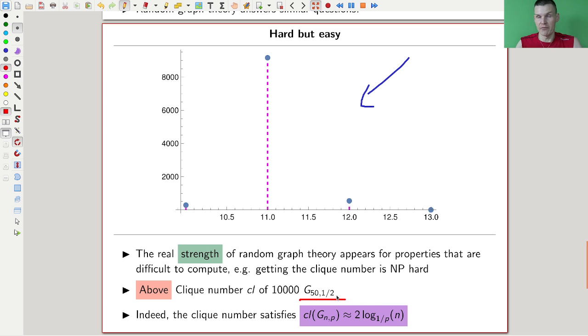That's a fun thing that happens for the average clique number. I did those 50 coin flip graphs, 10,000 of them, and computed the clique number. You can see a clear pattern. The clique number just spikes at one value, which is around 11 in this case. So almost all graphs have the same clique number, but determining it explicitly is still very difficult. This is really where random graph theory shines, because the clique number is just an example of many things that are difficult to compute, like Hamiltonian cycles or colorings, when actually most graphs are very easy to determine.